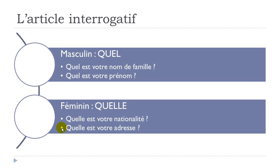Here we've got two examples. NOM and PRÉNOM were masculine words so we used QUEL. But NATIONALITÉ and ADRESSE — meaning NATIONALITY and ADDRESS — are feminine words. So you use the feminine form of the interrogatif: QUELLE EST VOTRE NATIONALITÉ? — What is your nationality? QUELLE EST VOTRE ADRESSE? — What is your address?